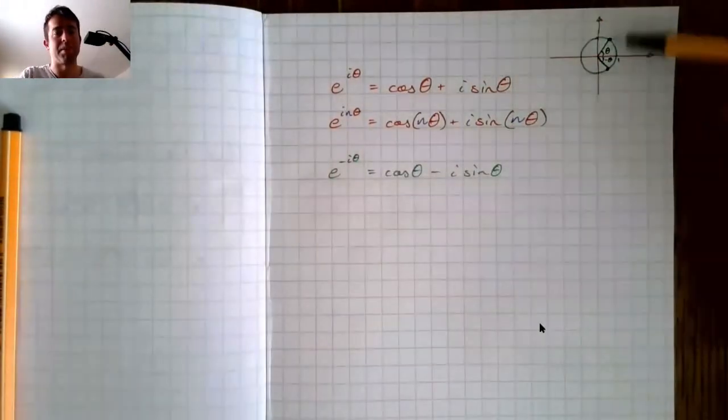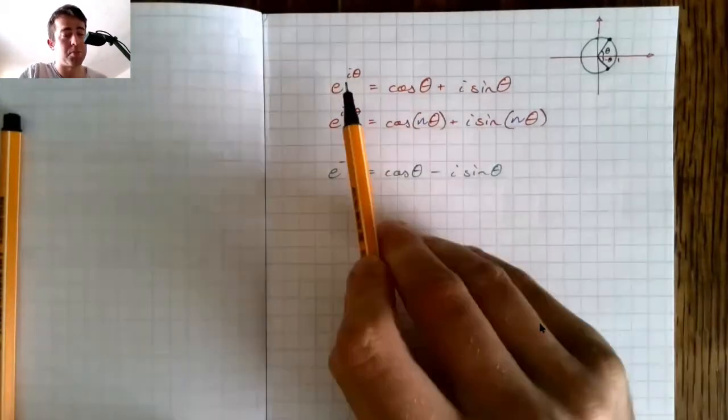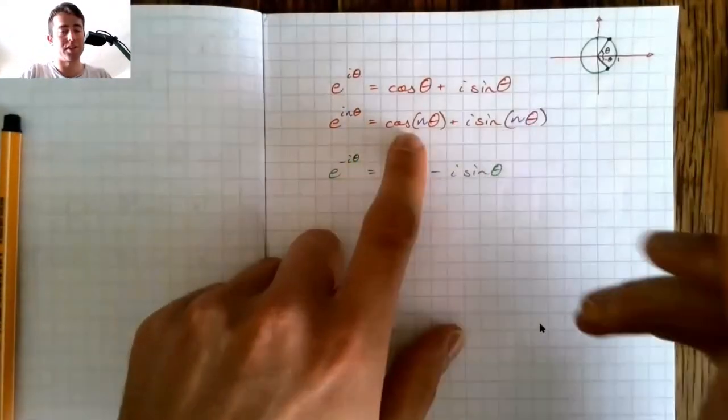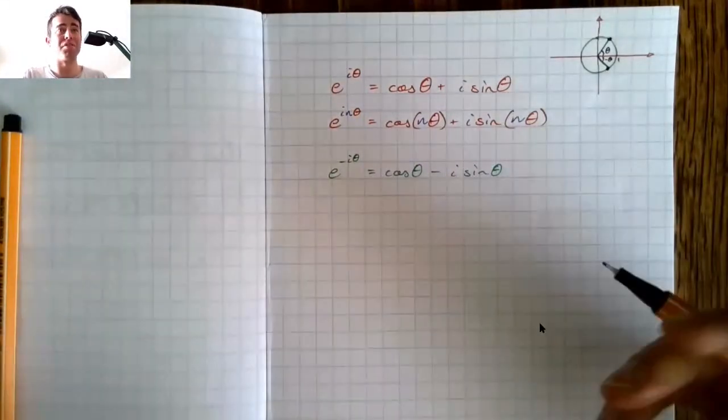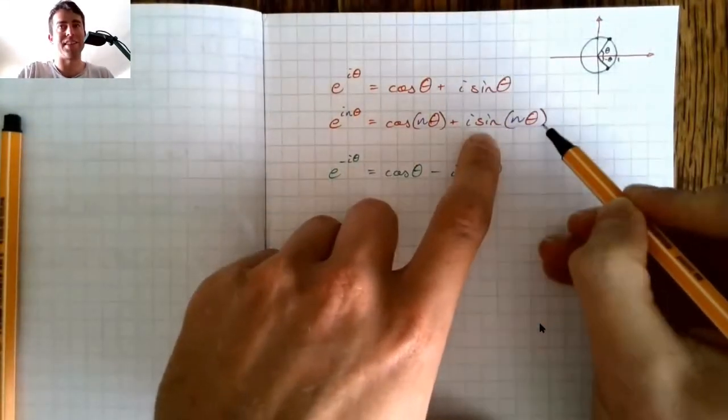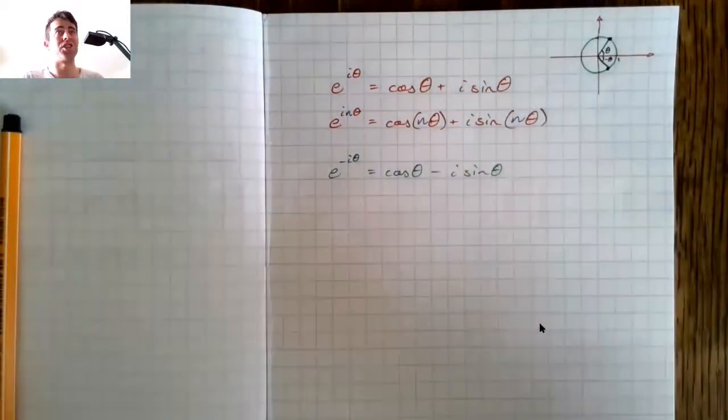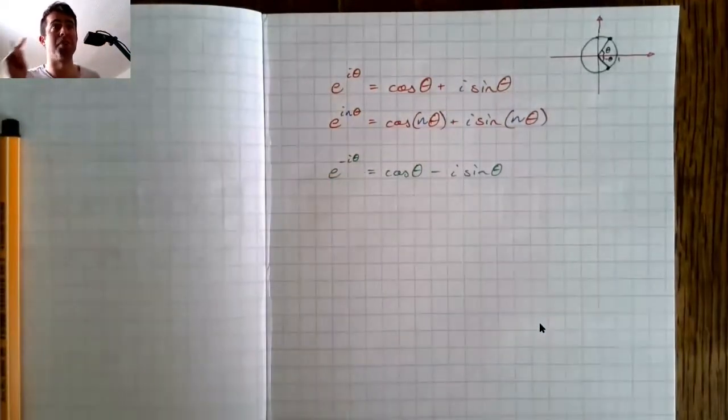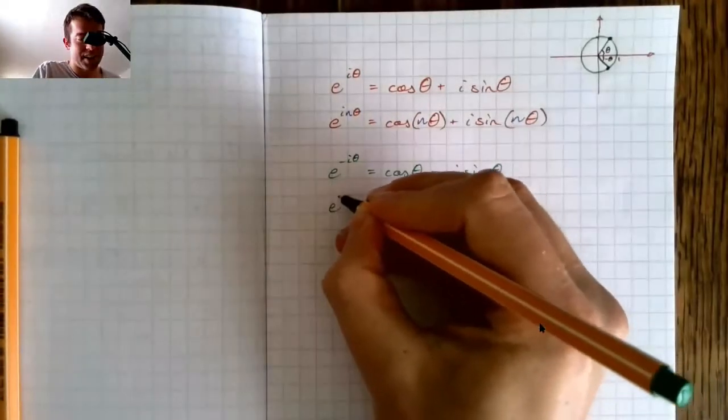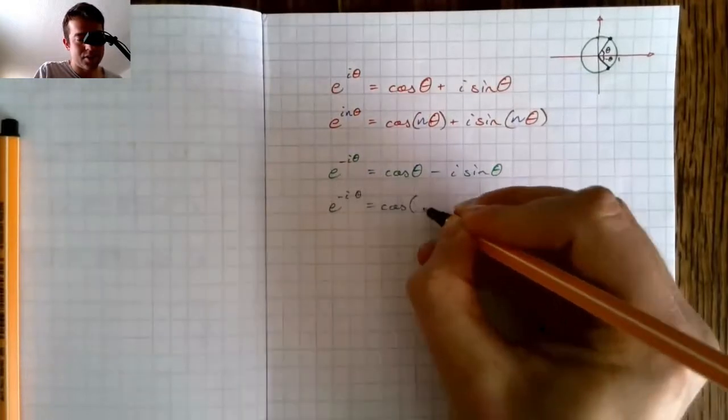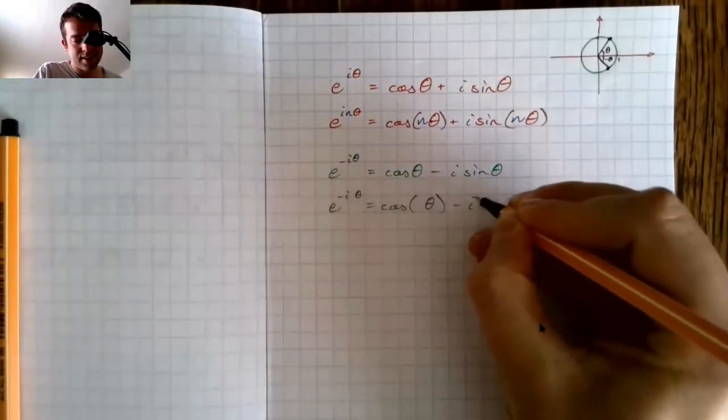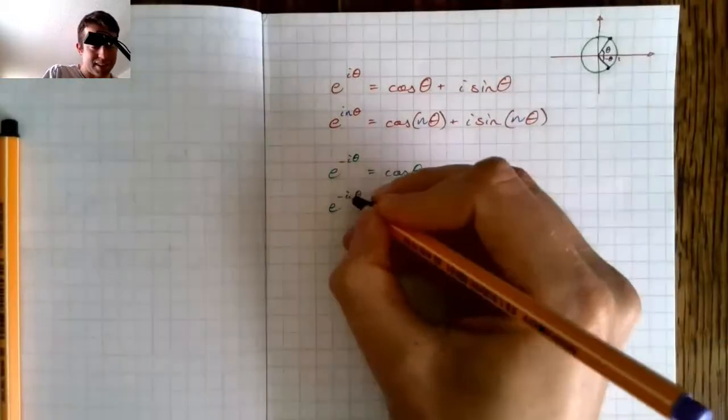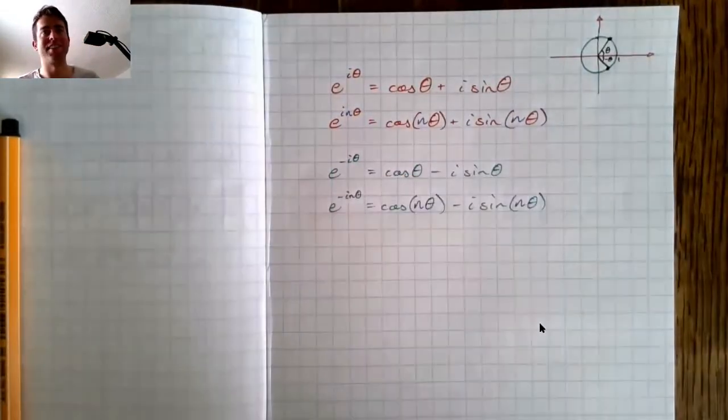So, equals cos theta minus i sine theta. We can get to that in different ways. I got to that by thinking about the diagram. We can also get to it by just plugging n is minus 1 in here, and using properties of sine and cos, because cos of negative theta is just cos of theta. It's an even function. And sine of negative theta is minus sine of theta. It's an odd function. That's what we call them, even and odd functions, when they have those symmetries. I also want to write this out just for a sense of completion here. I want to write this out with the n in there as well.